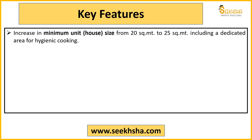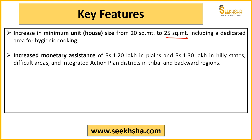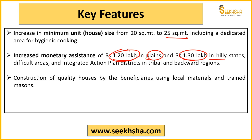Regarding features: earlier the minimum unit house size was 20 square meters, which has now been increased to 25 square meters, so that a hygienic dedicated space for cooking can also be created. For monetary assistance, houses constructed in plain areas will receive 1,20,000 rupees, and for hilly states, difficult areas, and tribal areas, it will be 1,30,000 rupees.